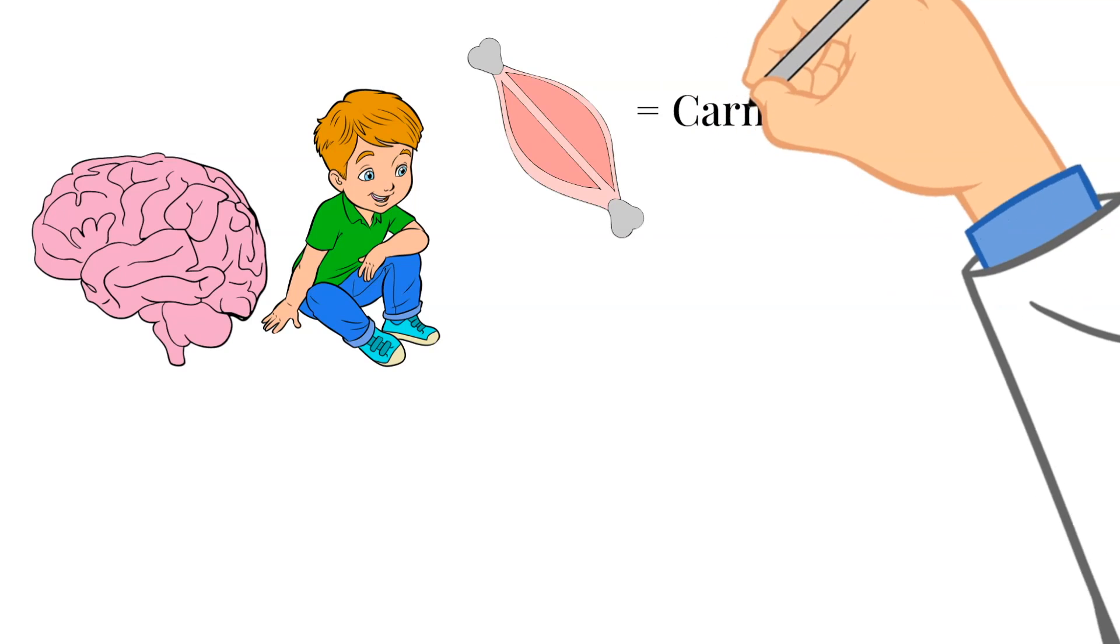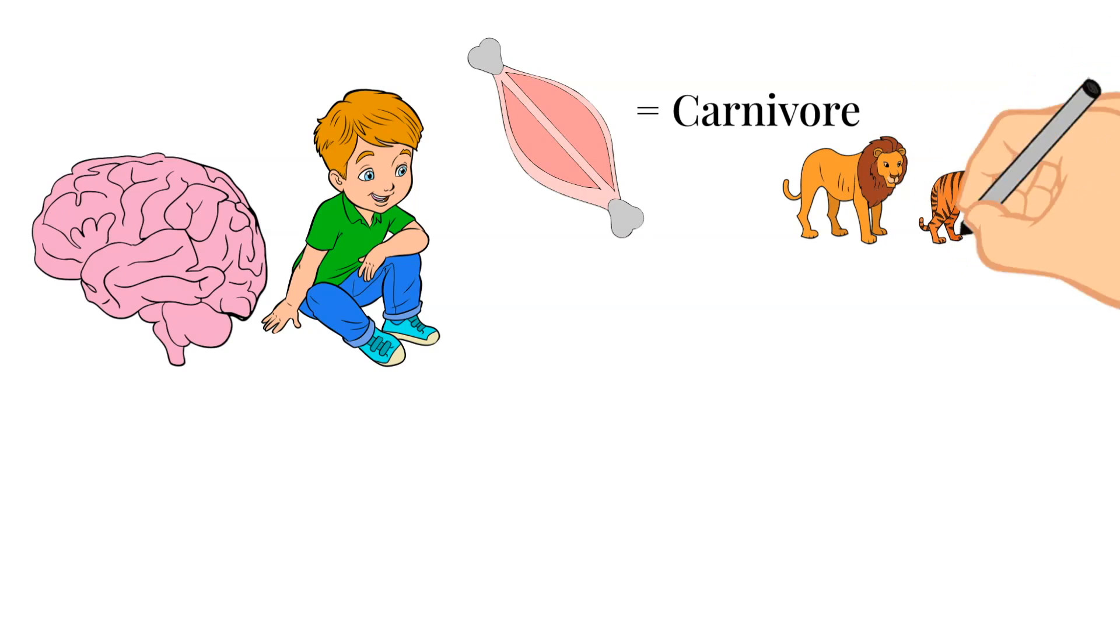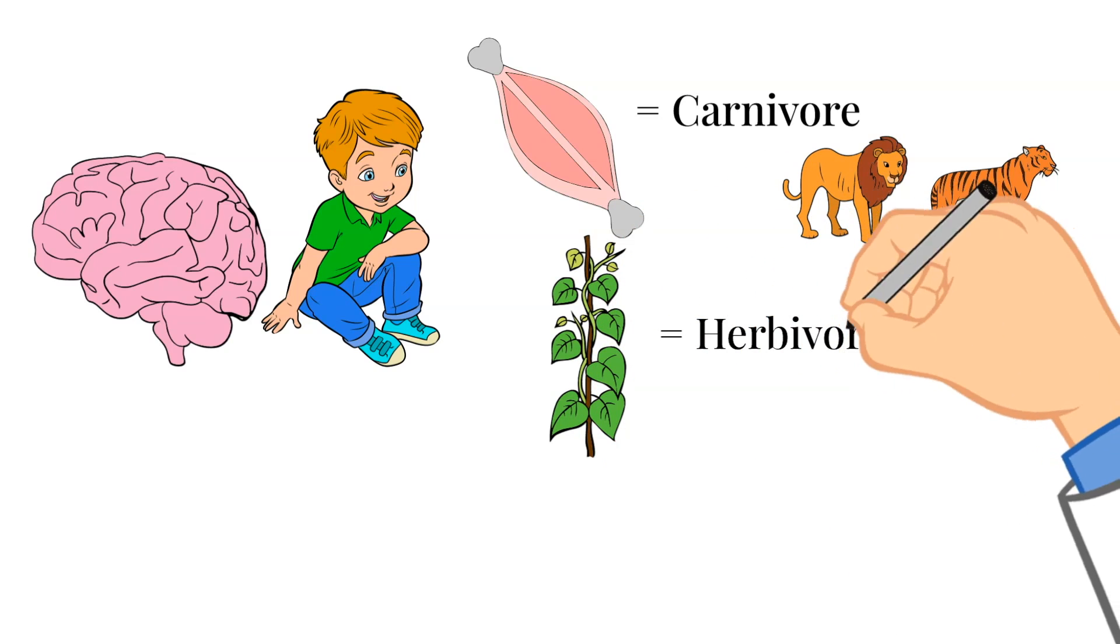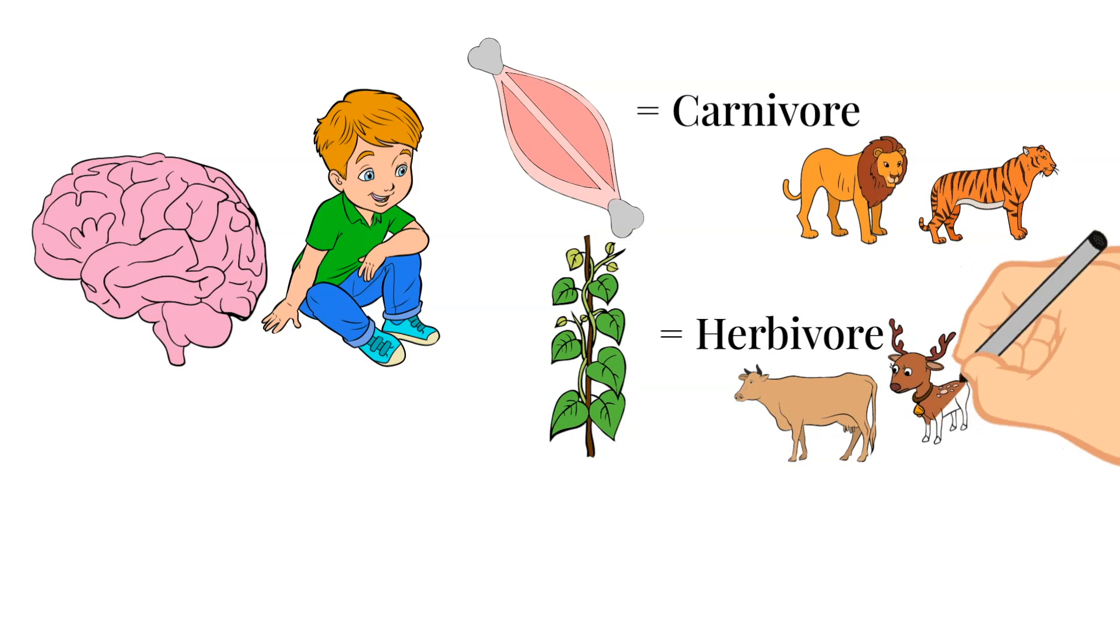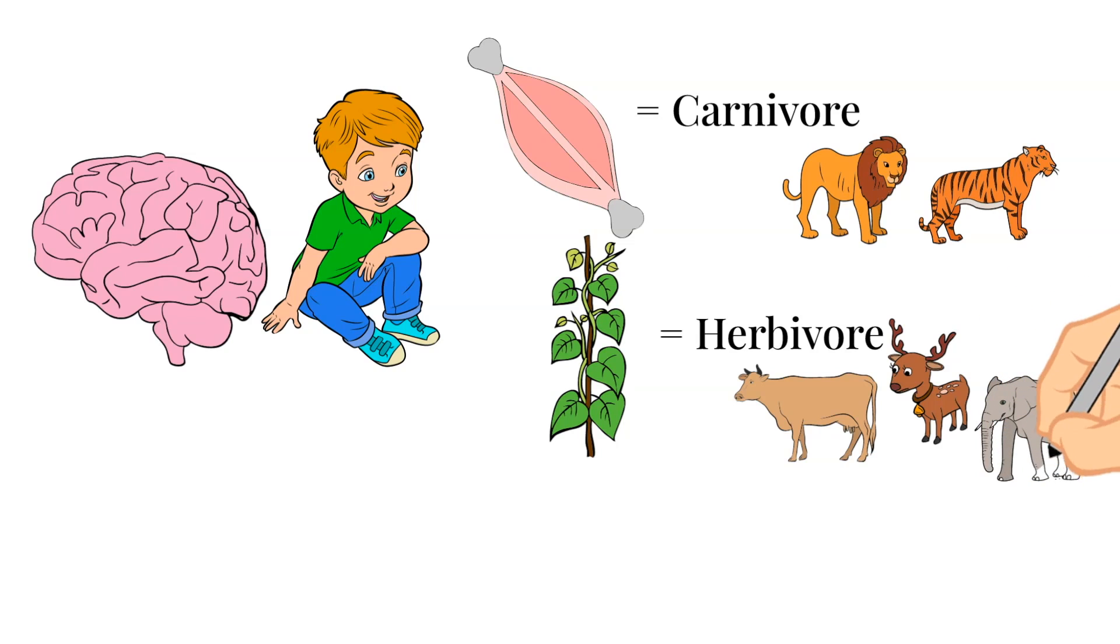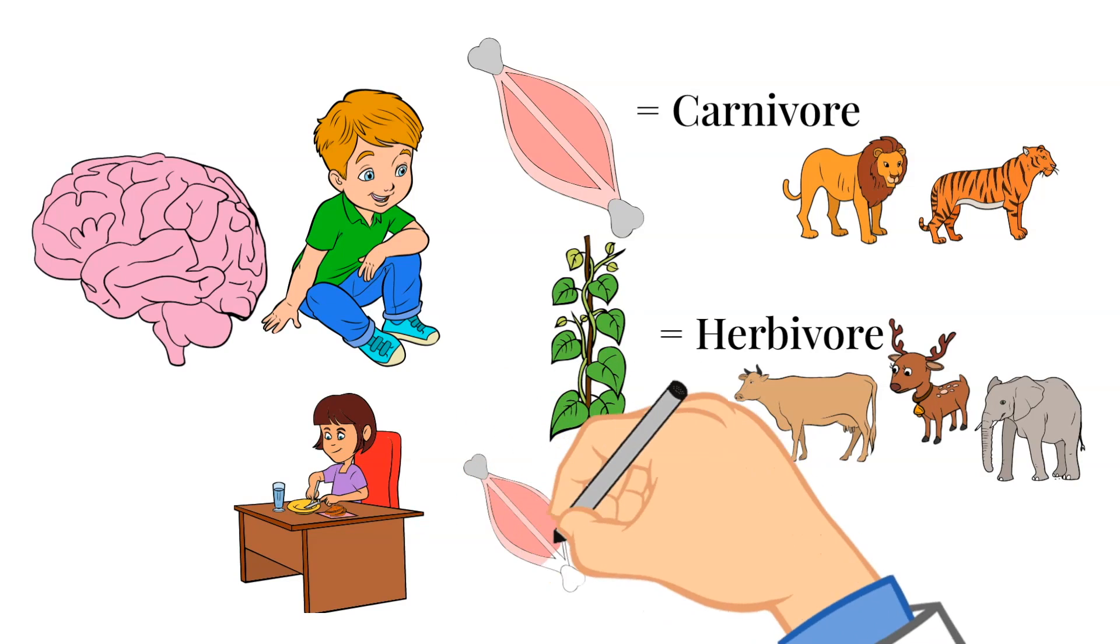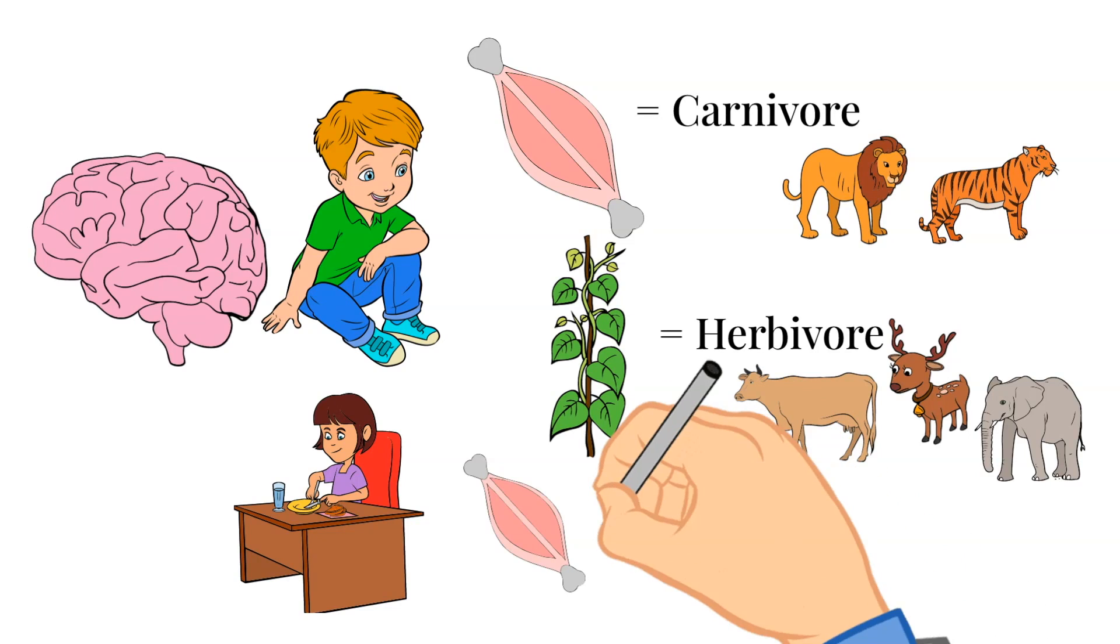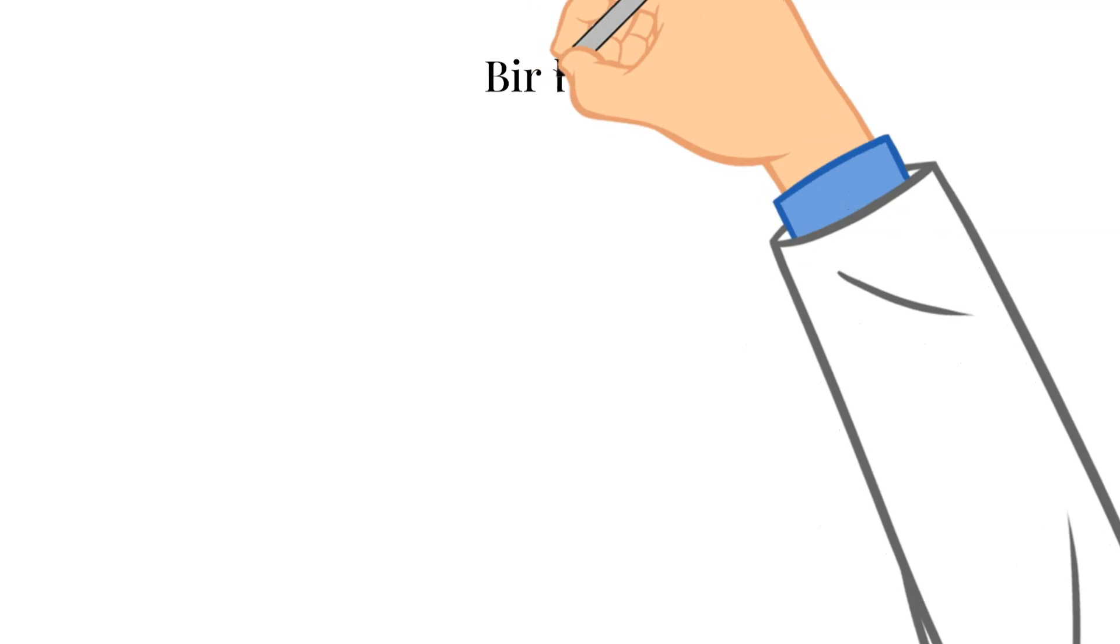So what do mammals eat? Mammals that eat meat are called carnivores. And this includes animals like lions and tigers. Now there are also mammals that will only eat plants. These are called herbivores. Some examples of herbivores are cows and deer and elephants. Now you might be thinking, humans are mammals, but we eat both plants and meat. So what are we? We are something called an omnivore. Omnivores eat both meat and plants.